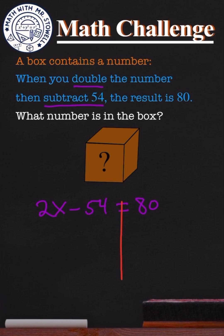Notice we do not have any fractions or parentheses in here, so we are going to start with addition and subtraction. We have minus 54. The opposite of a minus is a plus, so we need to add 54 to both sides, and that is going to give us 2x equals 134.